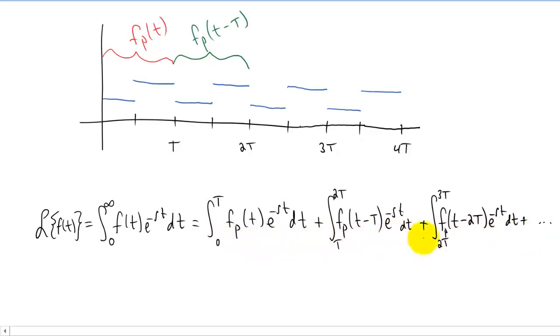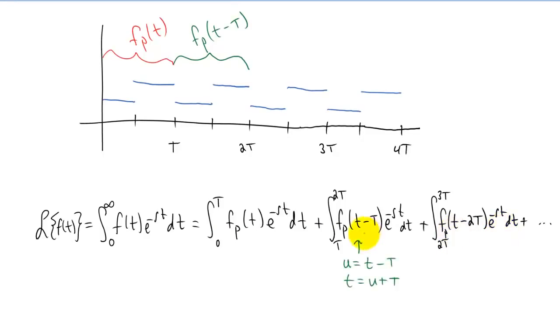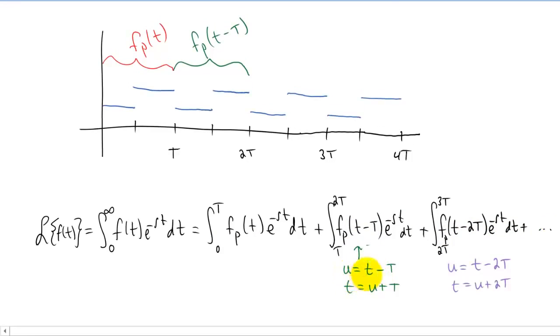Now all I'm going to do is I'm just going to rewrite this. I'm going to rewrite each one of these integrals with a u substitution. So in this integral here the u substitution is u equals little t minus big T. Big T of course is just a constant that we're going to know when we're given this function. This integral here is going to have u substitution u equals t minus 2T and so on.